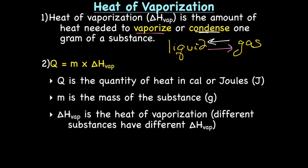We have an equation for heat of vaporization, which is exactly the same as heat of fusion: Q = m × ΔH_vap. Again, Q is the quantity of heat in calories or joules. m is the mass of the substance in grams. And ΔH_vap is the heat of vaporization, which is a constant for a particular substance. Every substance has its own heat of vaporization, just like every substance has its own specific heat of fusion.